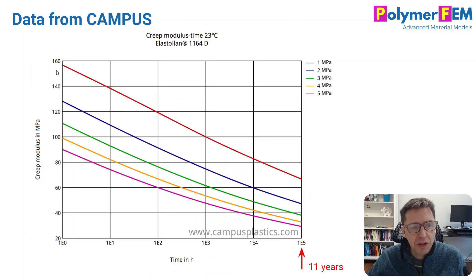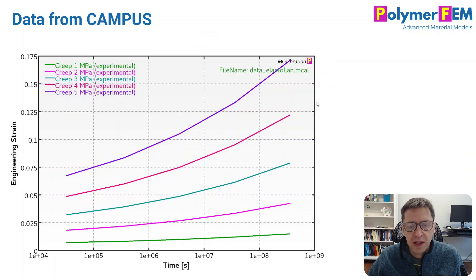The Campus Plastics database also contains creep modulus data, in this case from one hour up to 11 years. It's really awesome to have that information for at least five different stress levels. And to use this in MCalibration, we need to convert it to engineering strain versus time.